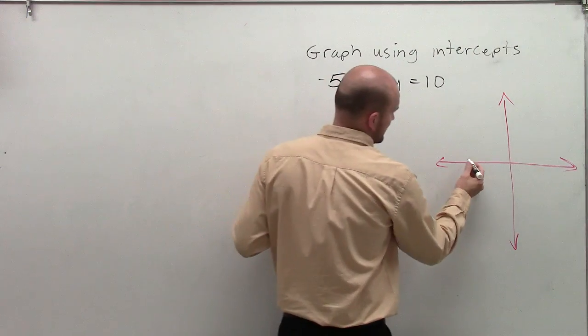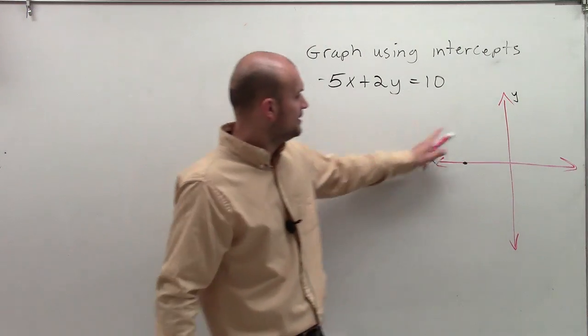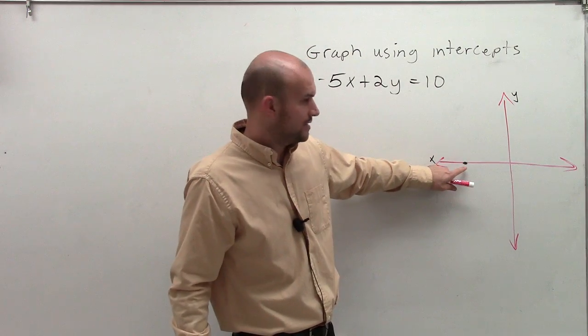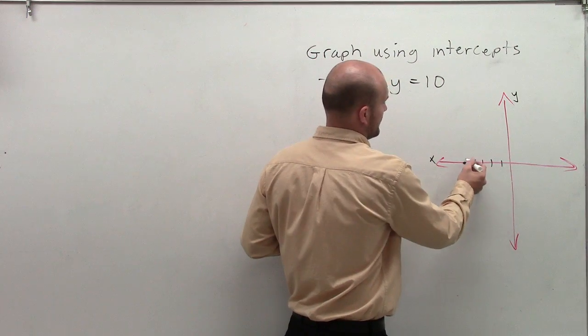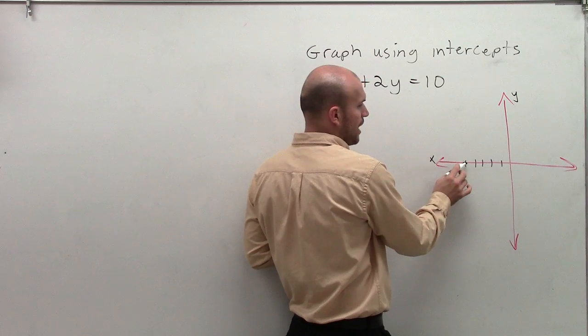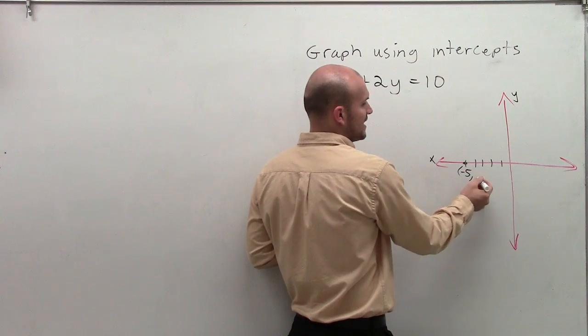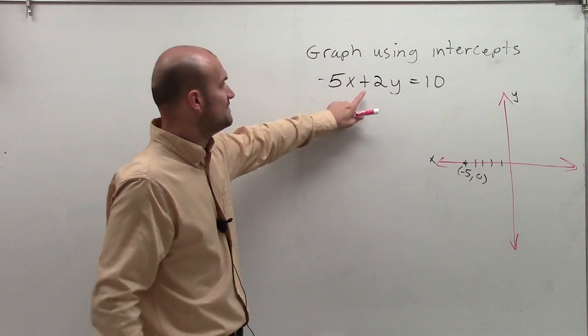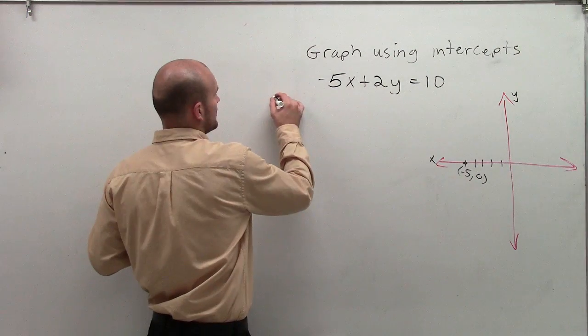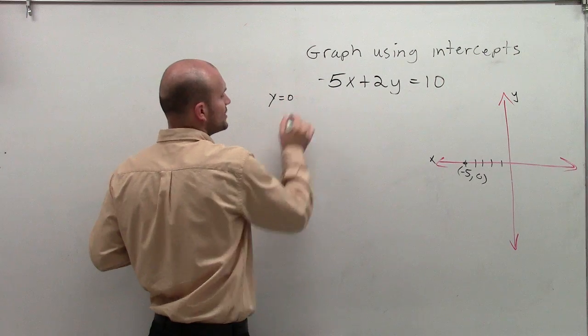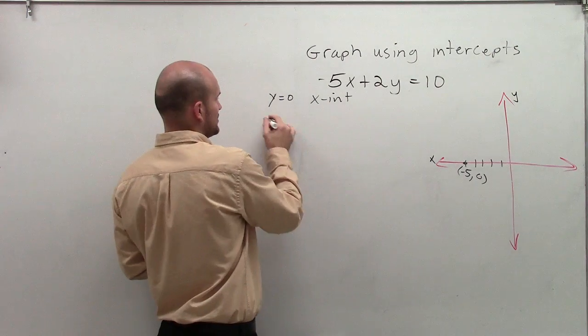So what I do is I look at the x-intercept. Here's the x-axis, here's the y-axis. Let's pretend my x-axis is right here. What is the value? Let's say my x-axis is 1, 2, 3, 4, 5. What is the value of y at this point? So my x value is negative 5. What's the value of y? 0, right? So if I want to find the value in this equation, what I can do is if I say y equals 0, then I'm trying to find my x-intercept.